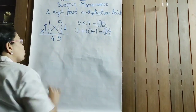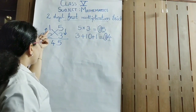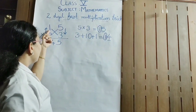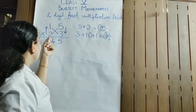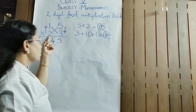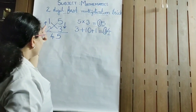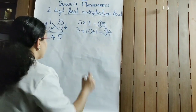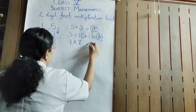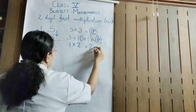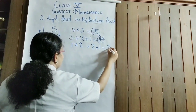Here we are going to multiply the tens place numbers. In the first number 15, you will have 1 as the tens place. In the second, you will get 2 as the tens place number. So you will be multiplying 1 into 2. In the third step, we write 1 into 2 equals 2, and you have a carry here, so you add 1, which equals 3.